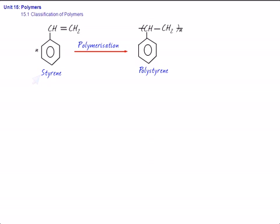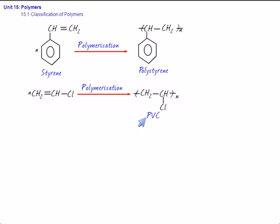Similarly, we can have N number of vinyl chloride. Vinyl chloride is CH2 double bond CHCl. So N number of vinyl chloride on polymerization gives CH2-CHCl dash N. This is a PVC, polyvinyl chloride. So polyvinyl chloride is again homopolymer because it is made up of only one type of material, only one type of monomer, vinyl chloride.